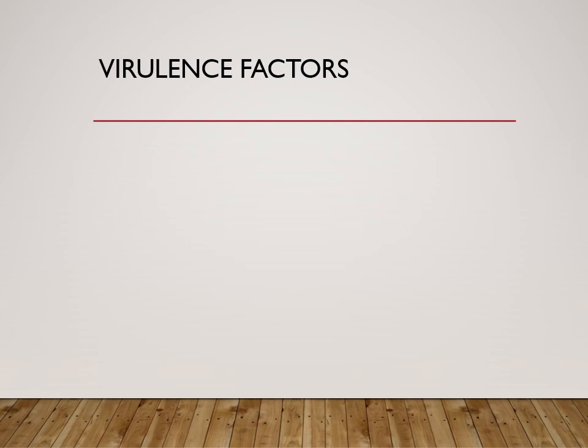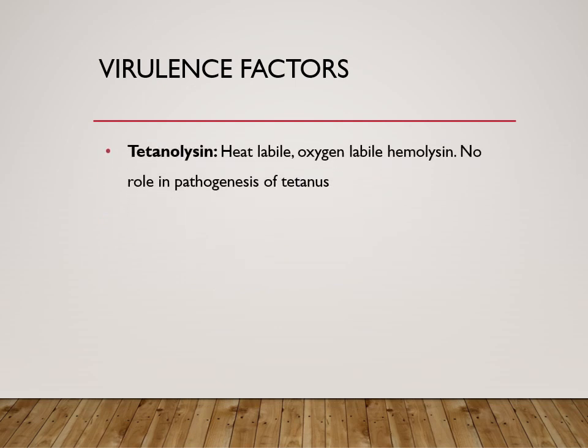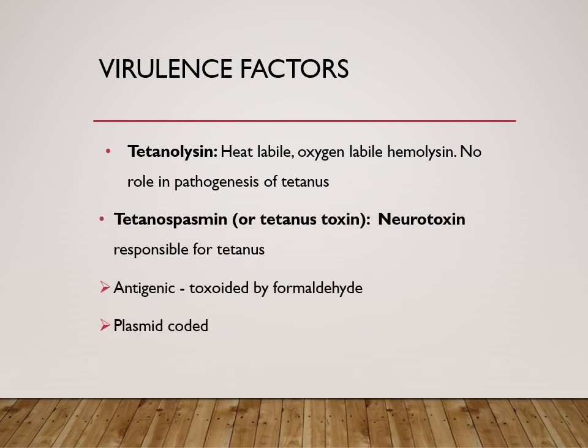The virulence factors of this bacteria: one is tetanolysin, which is basically not so important in the pathogenesis of tetanus. Another is tetanospasmin, which is the tetanus toxin — also a neurotoxin. This toxin is responsible for the main significant feature of this disease, which is skeletal muscle spasm. If we make a toxoid of it, it will have only antigenicity and not virulence, so it can be used for the preparation of the tetanus vaccine. This toxin is plasmid-coded.